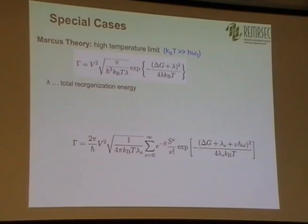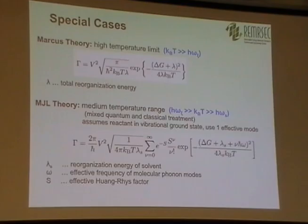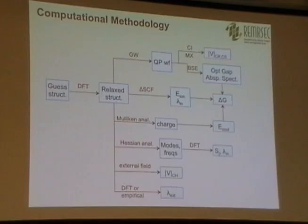We can also use a couple of idealizations. If the temperature is very high relative to the phonon energies, we can simplify the expression considerably — this is called Marcus Theory, where delta G is the change in Gibbs free energy. If we're in a temperature range intermediate between the phonon energies of the silicon quantum dot and the P3HT and the phonon energies of any surrounding solvent, we use another expression called MJL Theory — Marcus-Jortner-Levich. We use all three of these depending on the regime.